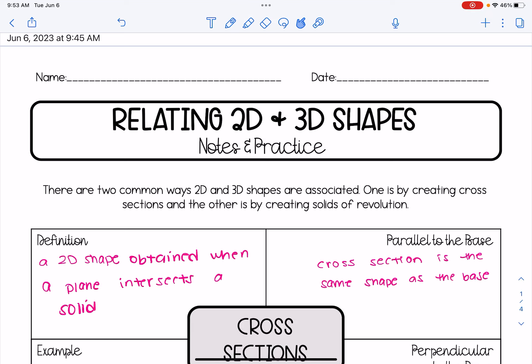In this video, we are going to be learning about two-dimensional and three-dimensional shapes and two major ways that they relate to one another. There are two common ways 2D and 3D shapes are associated. One is by creating cross-sections and the other is by creating solids of revolution.